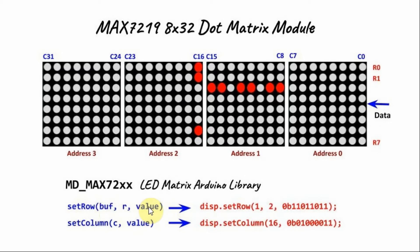Function setRow has three arguments: buffer, R and value. Buffer is the address of each module. R is the row position which has a value between 0 and 7. And value is the value at a specific row, which is an 8-bit number between 0 and all ones.